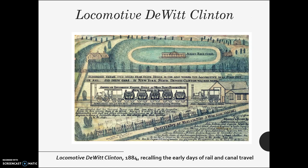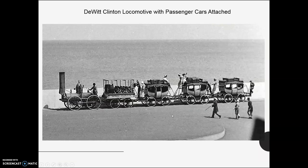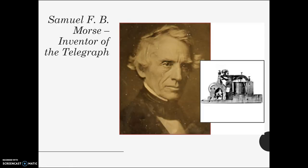Here is the DeWitt Clinton in New York State, one of the first locomotives — you can see this early train. It's very rudimentary; essentially, the idea was horse-and-carriage carriages just put on rails. Here's another depiction of it, which will obviously change over time.